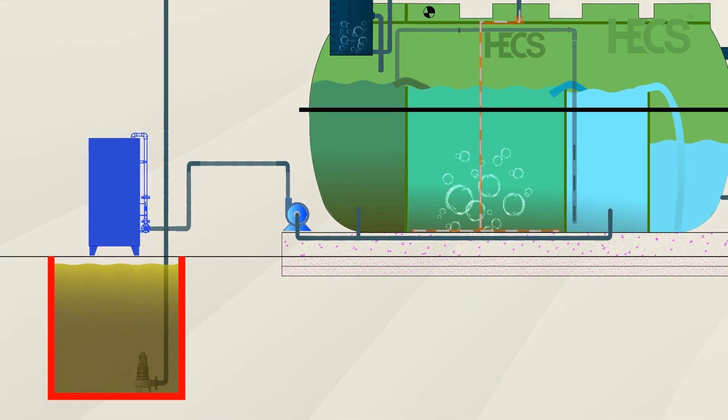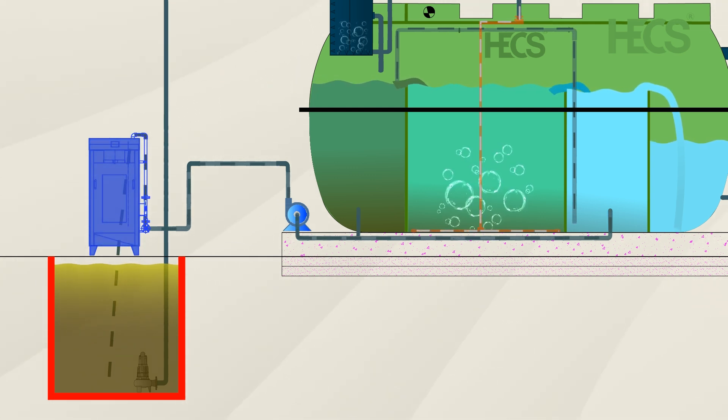Sludge management is streamlined within our plant. An internal recirculation system significantly minimizes sludge formation. Excess sludge is periodically transferred into a sludge bag filter, where the separated water is efficiently returned to the collection tank, completing a full cycle of sustainability.